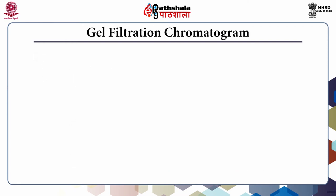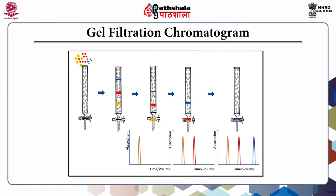Now we are going to discuss about the gel filtration chromatogram. A chromatogram is the representation of molecules coming out of the chromatography column — a simple graph on paper or a computer screen. Every peak in this graph indicates one set of specific biomolecules. In the picture, the column is separating three different kinds of molecules represented by yellow, red, and blue colors, which differ in size.